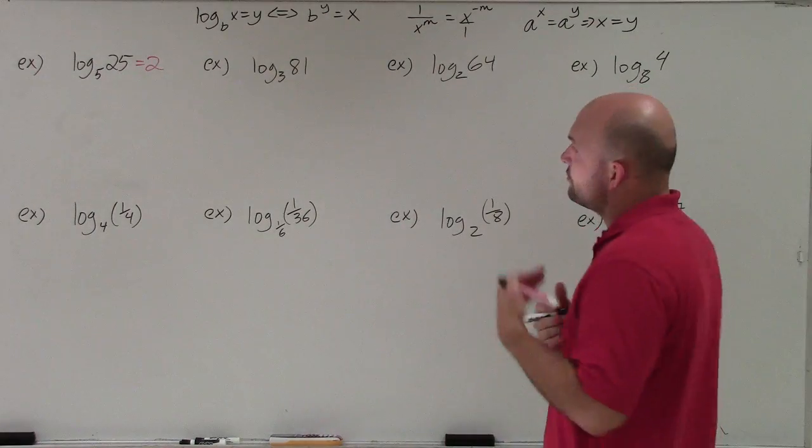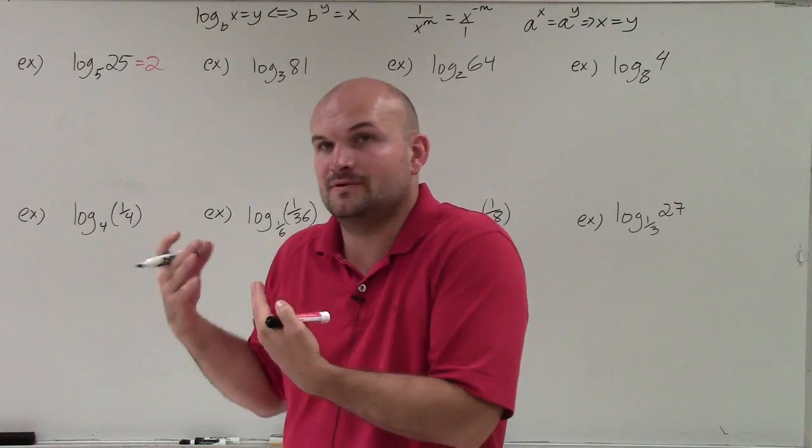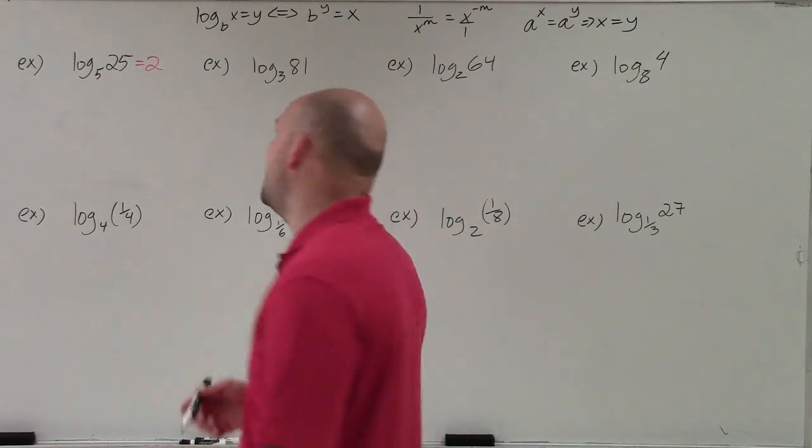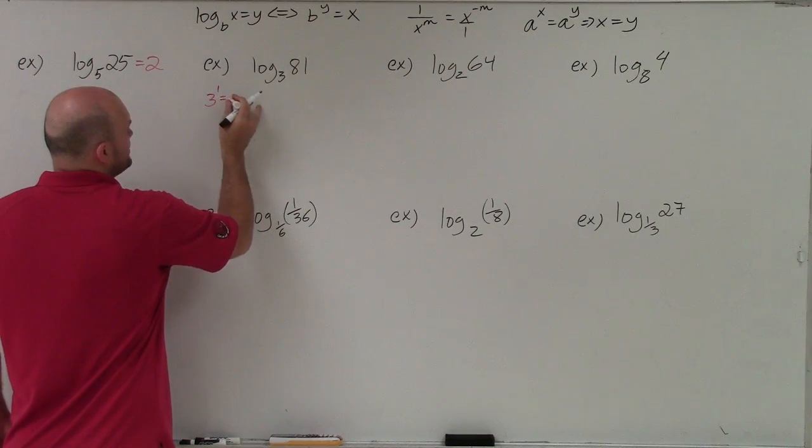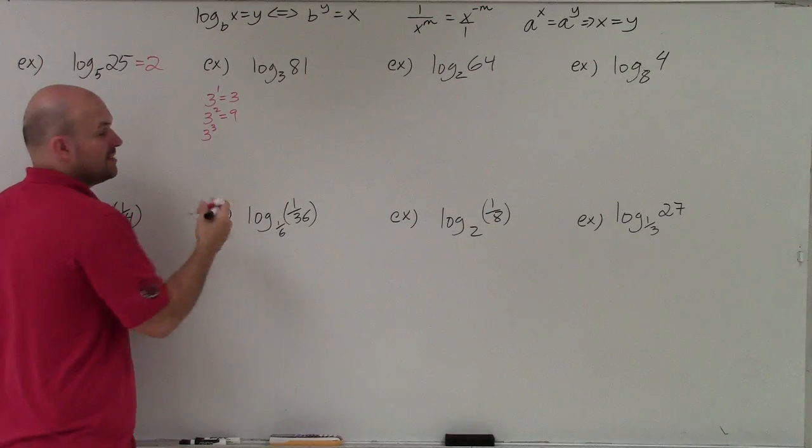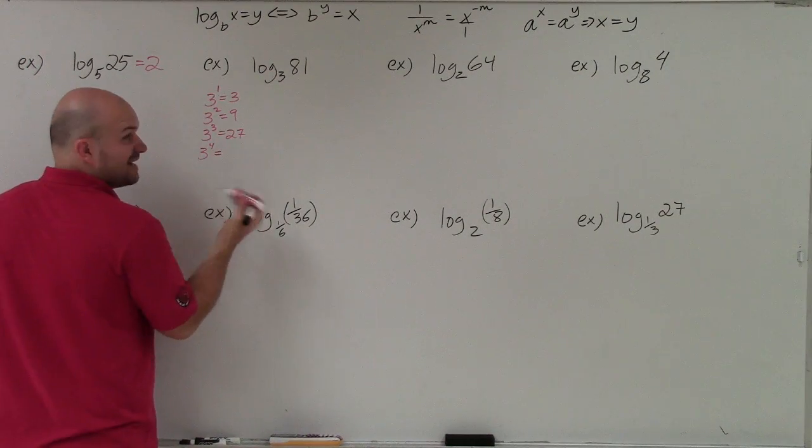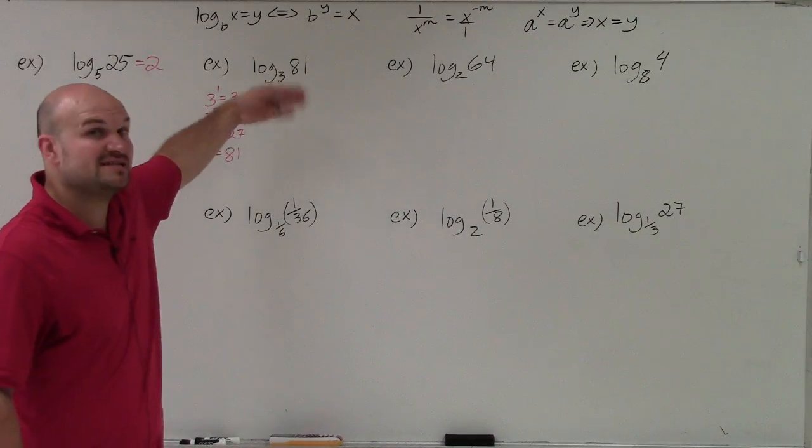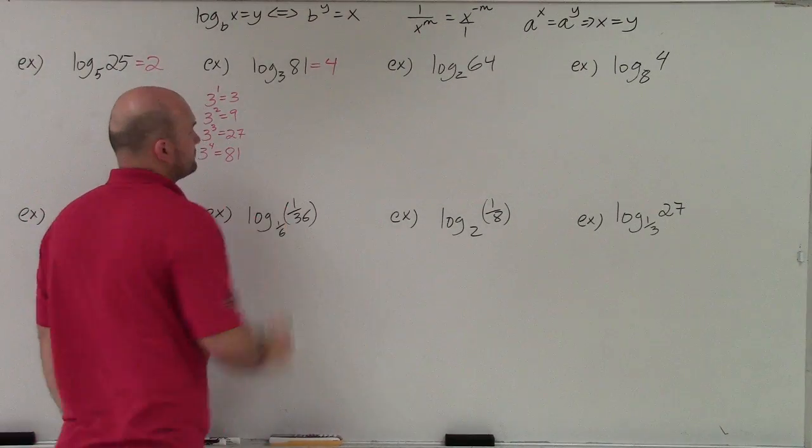Now, the next one is 3 raised to what power is 81? Now again, without a calculator, you need to kind of start knowing the powers of 3, 4, 5, 6, 2. So what I would start doing is, if you're not really familiar what this would be, start raising 3 to powers. 3 to the first power is 3. 3 squared is 9. 3 cubed, you might have to type in your calculator, but eventually you'll understand that it's 27. 3 to the fourth power, you might have to type in your calculator originally, but you'll see that it's 81. So that means 3 raised to what power is 81? Well, the answer is equal to 4.